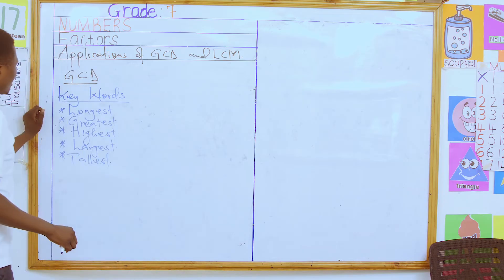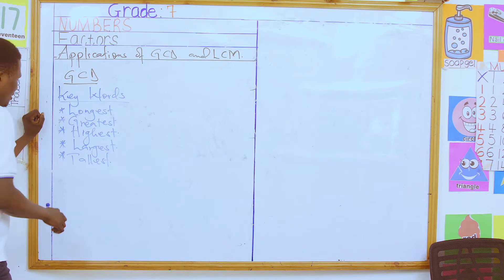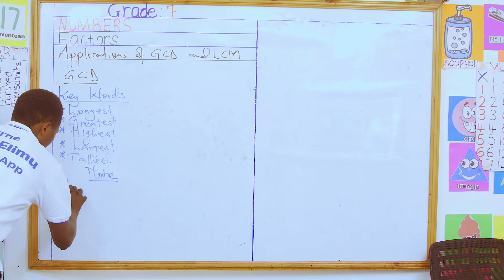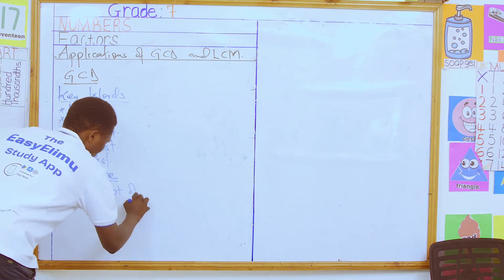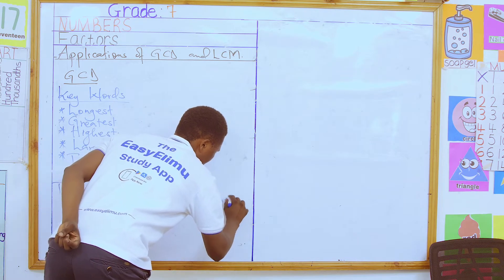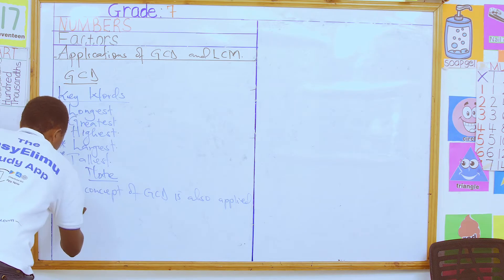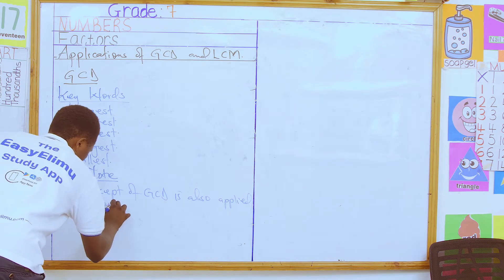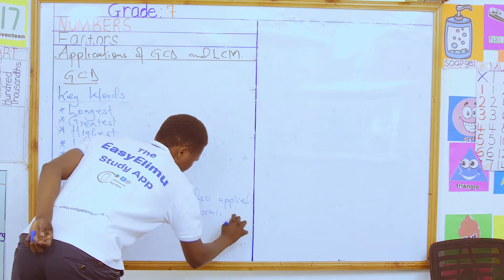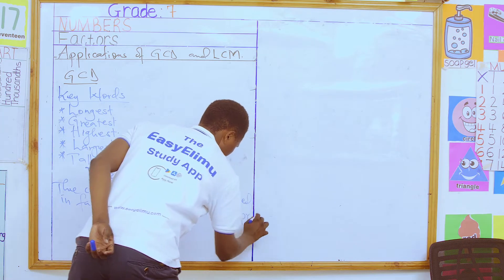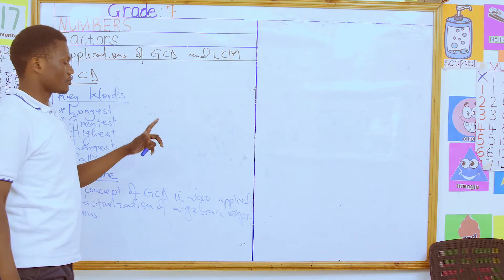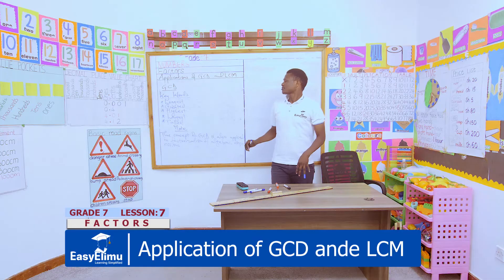We can also apply the concept of GCD in the factorization of algebraic expressions. You will come to know more about that when you get to Grade 8. So at this particular juncture, we are only going to discuss normal examples whereby we can apply the knowledge of GCD.